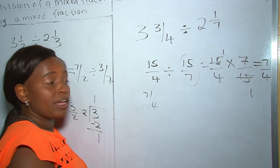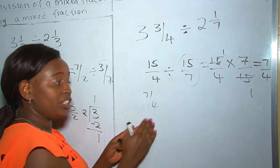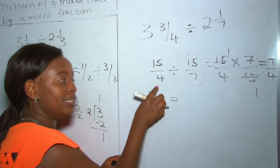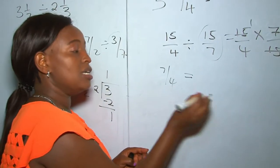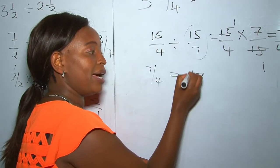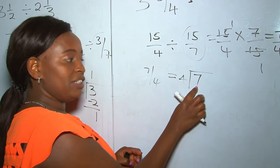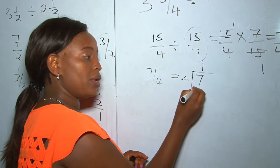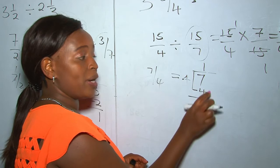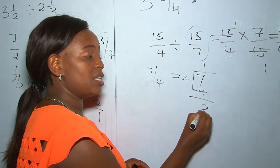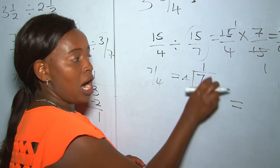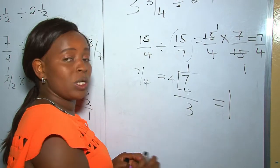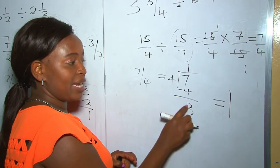7 over 4 is an improper fraction, so we change it into a mixed fraction. 7 divided by 4: 1 times 4 is 4, and 7 take away 4 is 3. Our quotient takes the position of the whole number and our remainder takes the position of the fraction, giving us 1 and three-quarters.